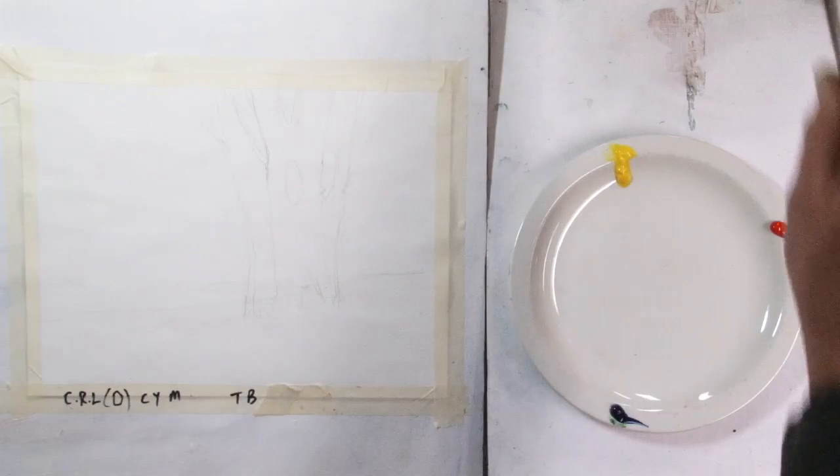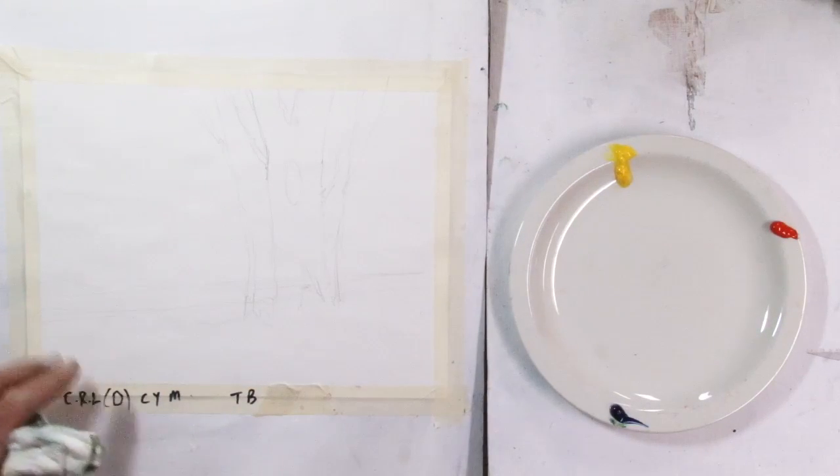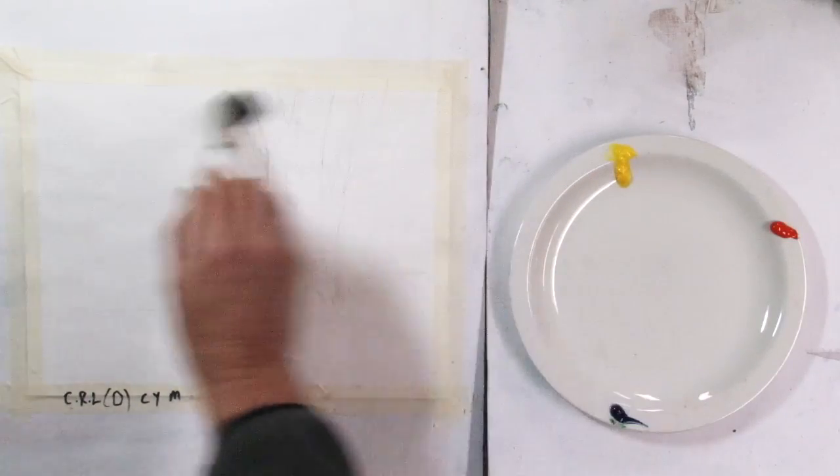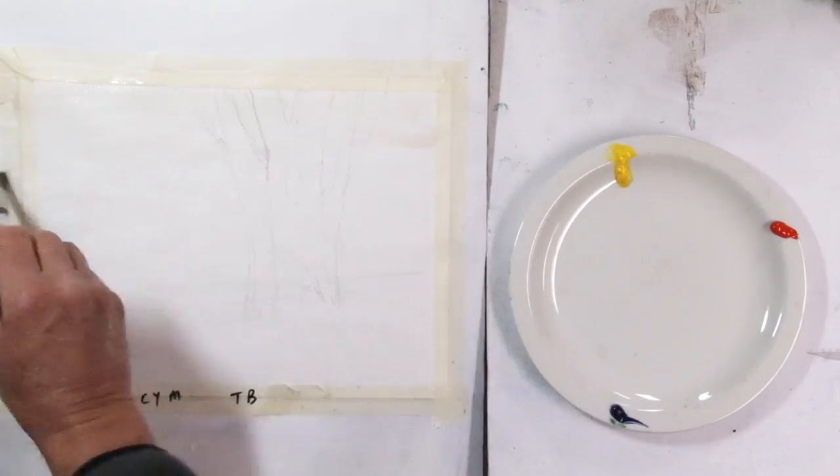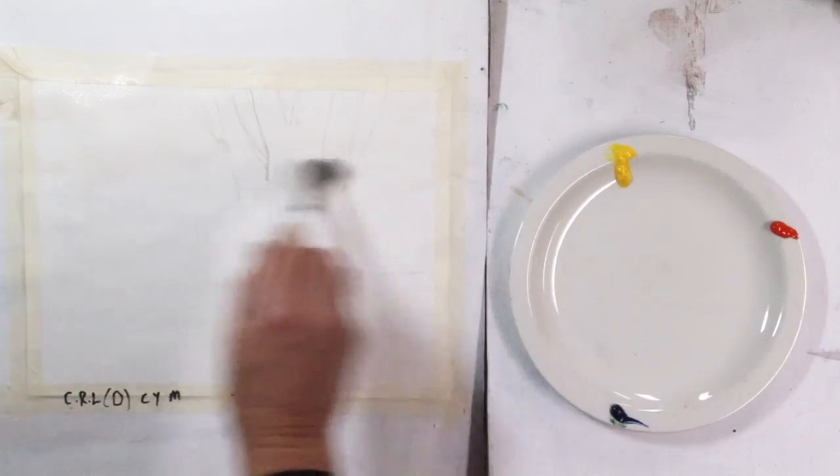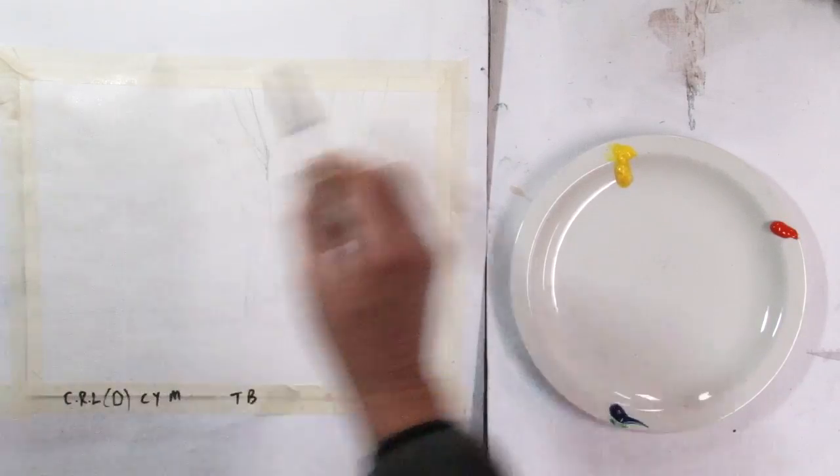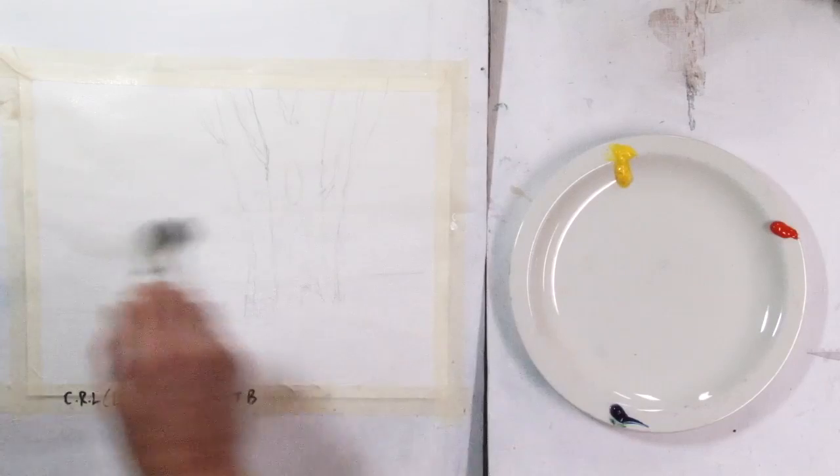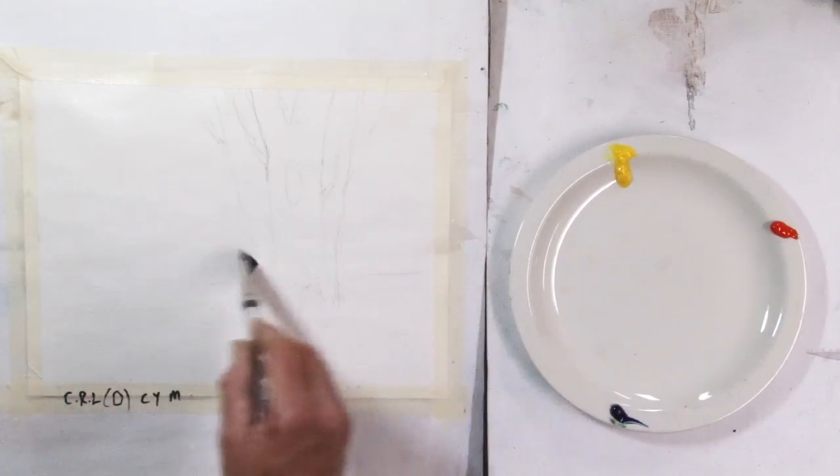Okay, so the first thing I want to do is the background is going to be wet on wet, so I'm going to soak the whole entire background. And you'll notice I'm going right over my main subject, the tree, but because it's going to be a much darker value, and so I can paint, the background's going to be quite light in value, so I can paint right over it with the tree, so I'm not worried.